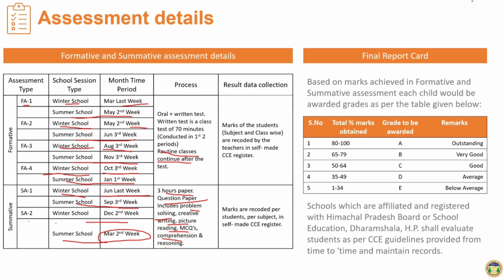If we talk about the final report and grading: marks 80–100 are grade A; marks 65–79 are Very Good (grade B); marks 50–64 are Good (grade C); marks 35–49 are grade D, which is average; and marks 1–34 are grade E, which is below average.